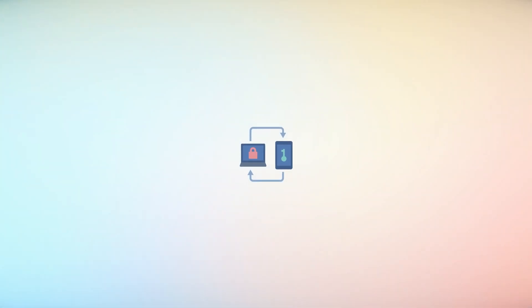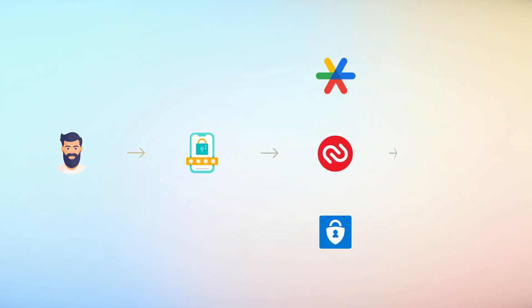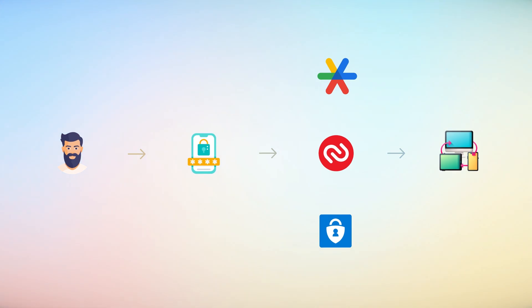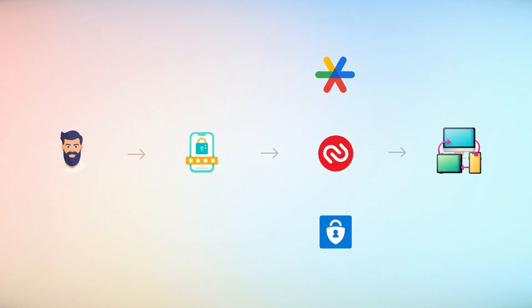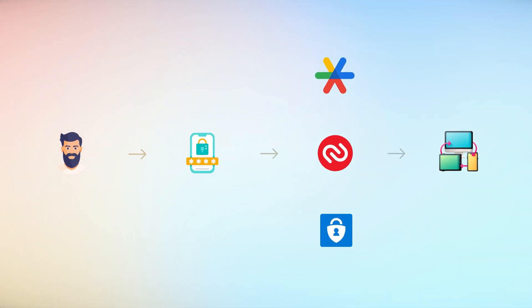Setting up an Authenticator app involves enabling two-factor authentication (2FA) on an online service that supports such apps. Users typically download an Authenticator app — such as Google Authenticator, Authy, or Microsoft Authenticator — on their smartphones or other devices.